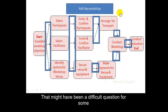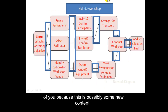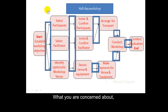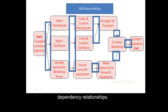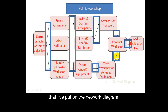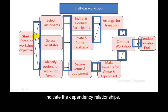That might have been a difficult question for some of you because this is possibly some new content. What you are concerned about when looking at the network diagram — that will be of interest when you develop the Gantt chart — are what's called dependency relationships. The arrows in the boxes on the network diagram indicate those dependency relationships.